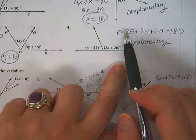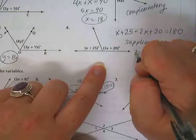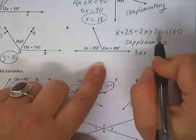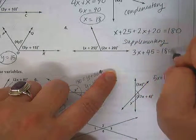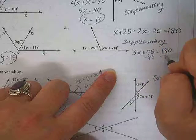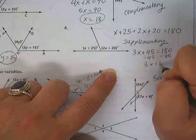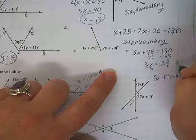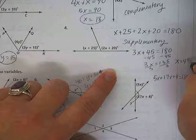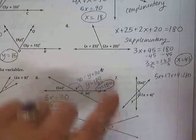Then this one, we add our x's together, so x plus 2x is 3x, 25 plus 20 is 45. We subtract our 45 from the other side, so we get 3x equals 135. We divide both sides by 3, so x equals, is it 45? Is that right? Good.